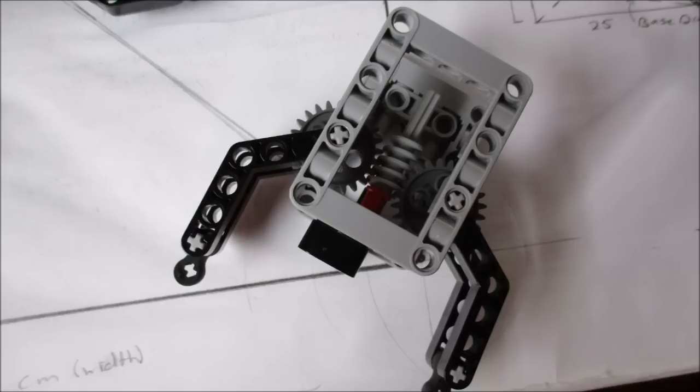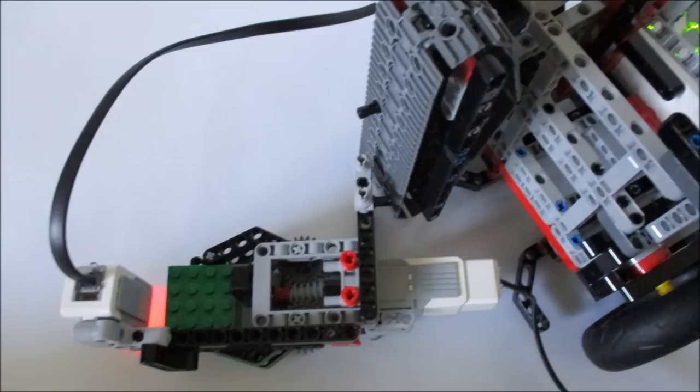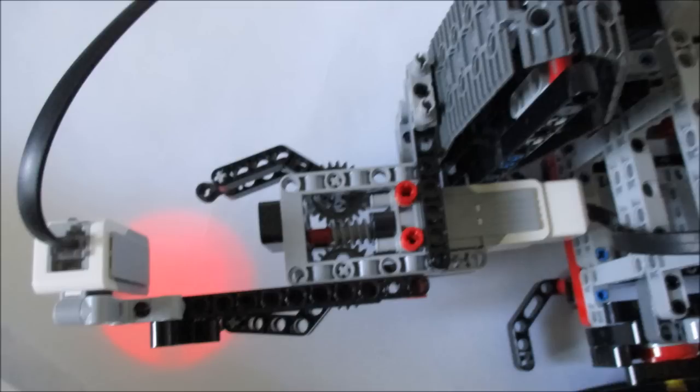that the only thing that's going to make the claw fingers move is the motor itself. And the rubber grip on the end of the fingers ensures that the object won't fall out and it has a nice, secure, attractive grip. Lastly, it's powered by an EV3 medium motor in the back.